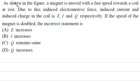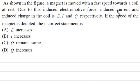Last question: As shown in the figure, a magnet is moved with fast speed towards a coil at rest. The induced EMF, induced current, and induced charge in the coil are E, I, and Q respectively. If the speed of the magnet is doubled, which is the incorrect statement?